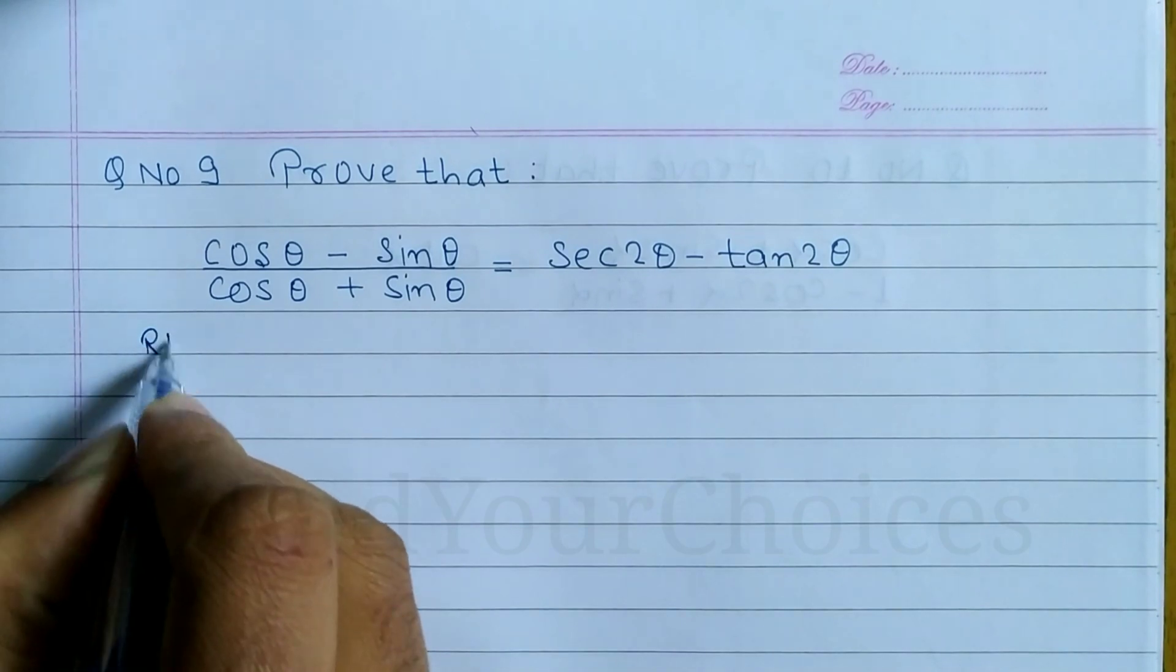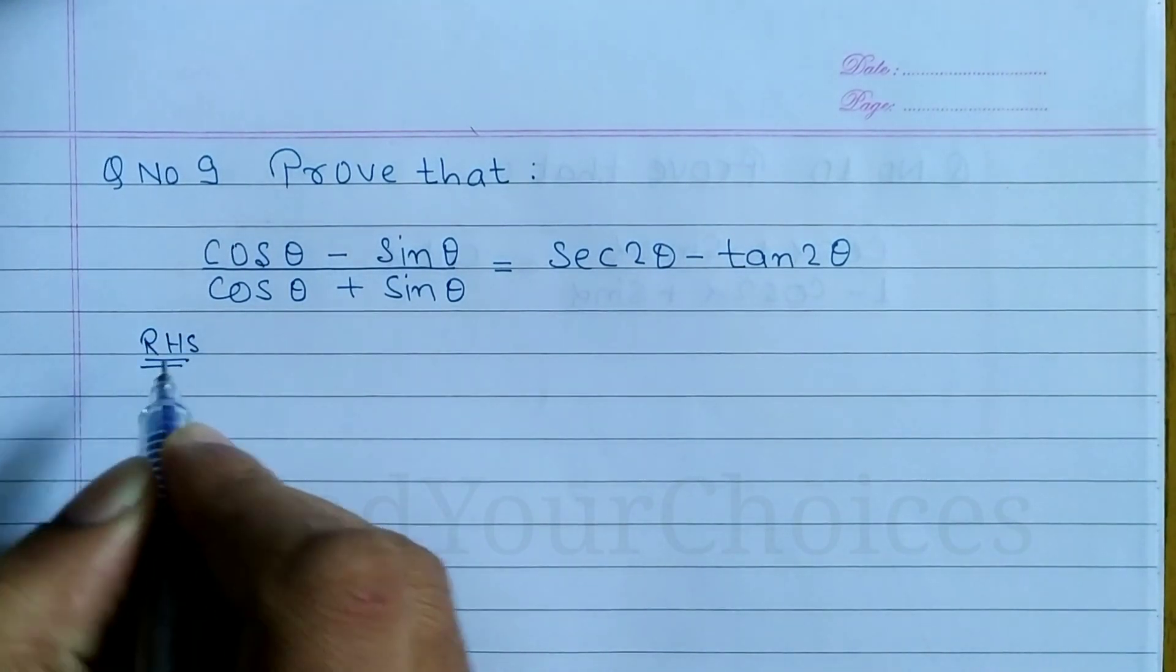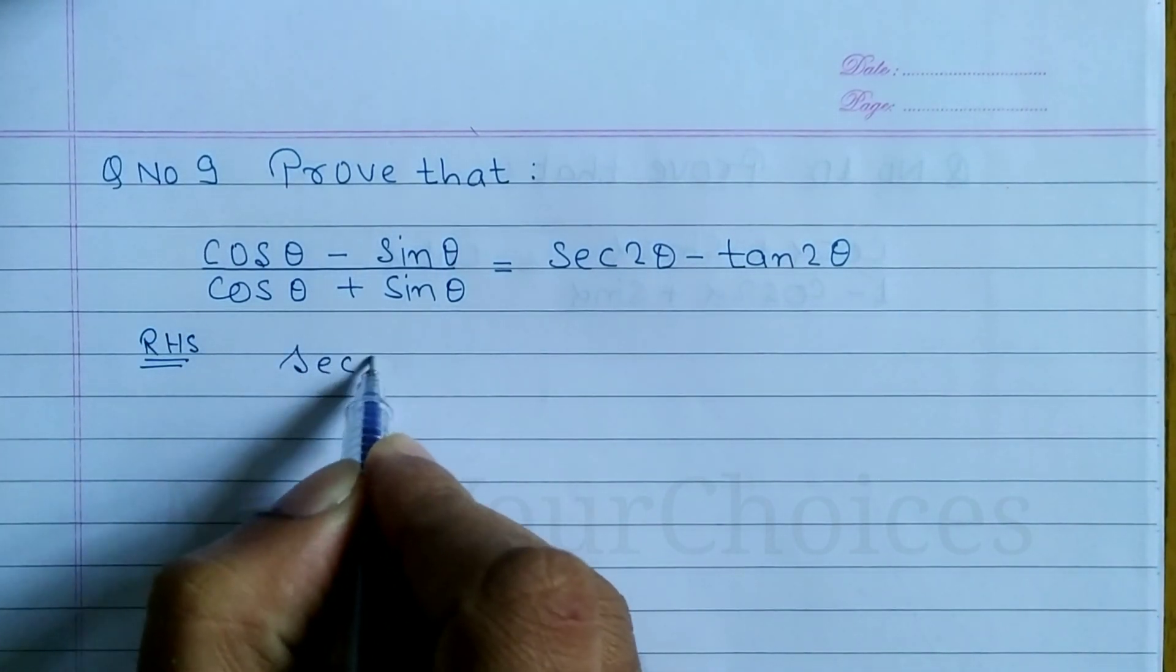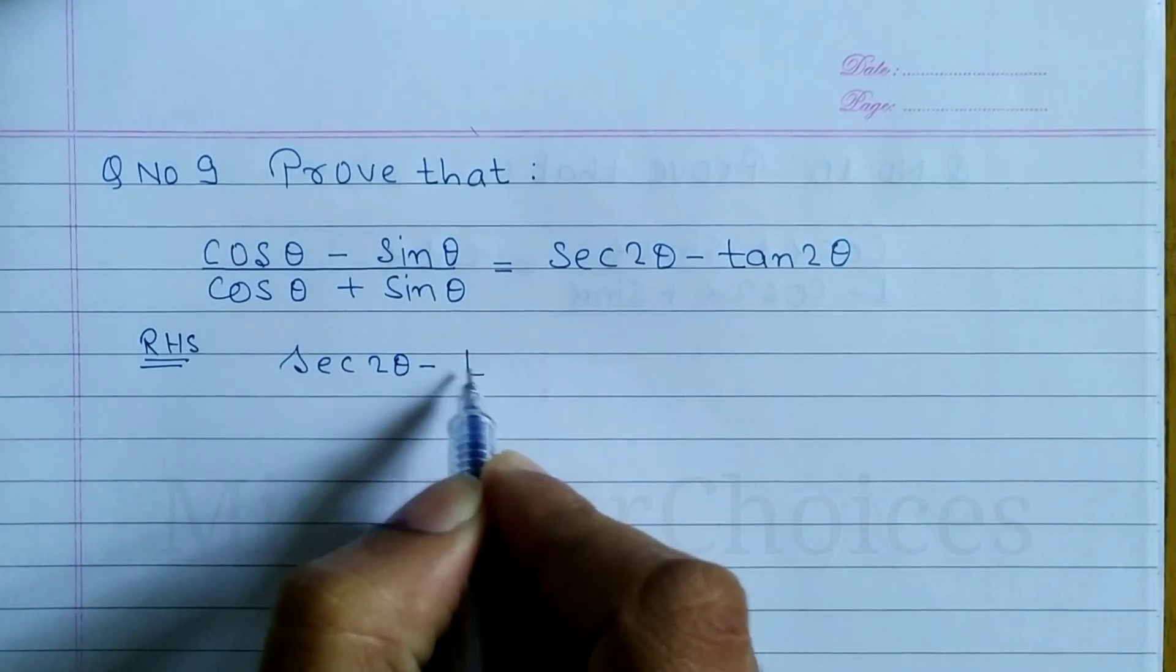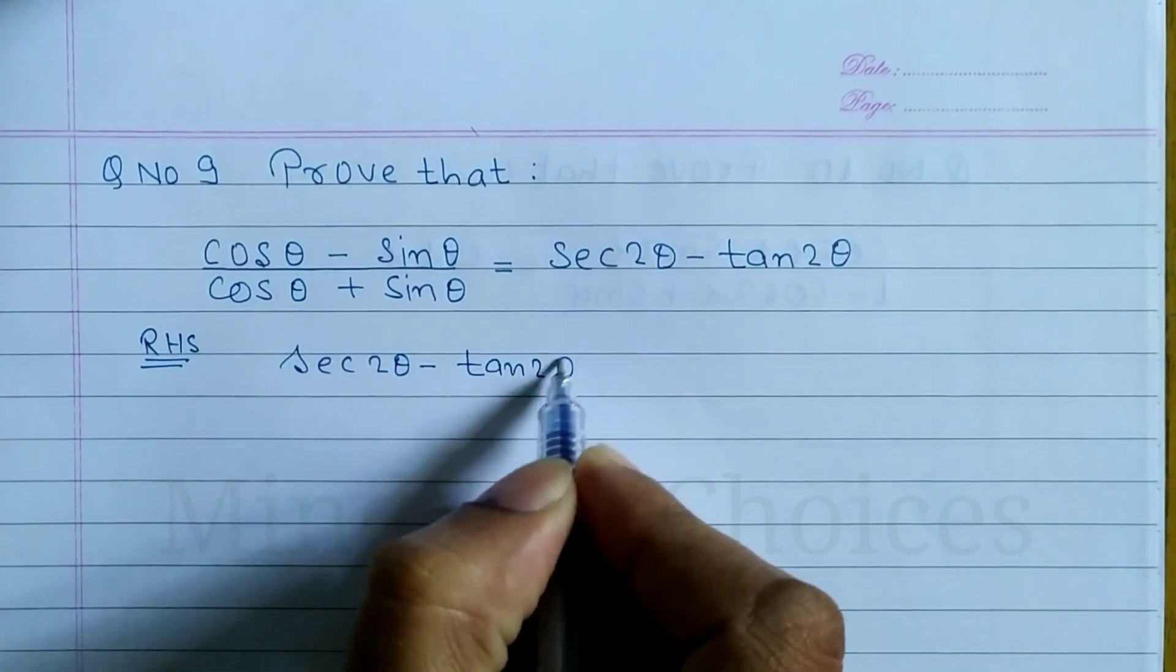We can prove RHS. What is RHS? sec 2 theta minus tan 2 theta. We can prove this.